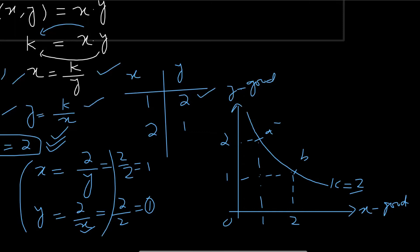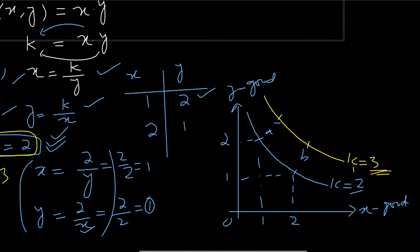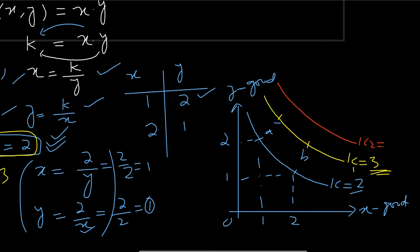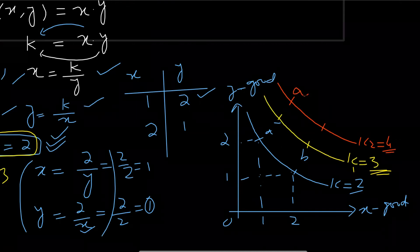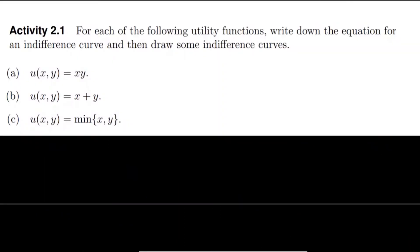If we change the value of k from 2 to 3, the indifference curve moves upward to IC1, where each combination gives satisfaction of 3 units. Moving it further upward to IC2 shows even more satisfaction — say 4 or 5 units — and every combination along IC2 gives the consumer that same higher level of satisfaction.